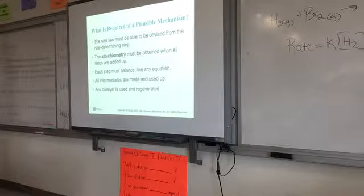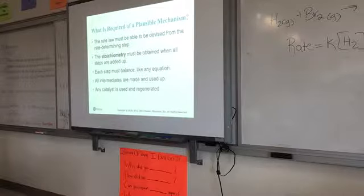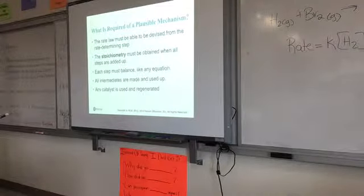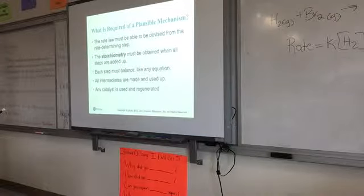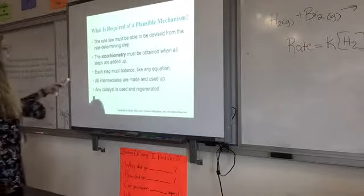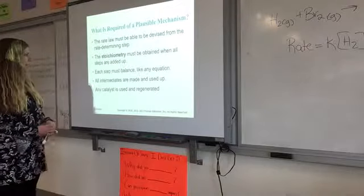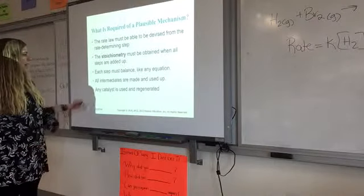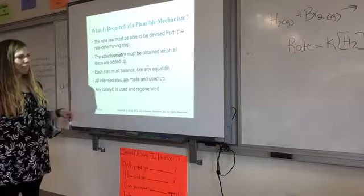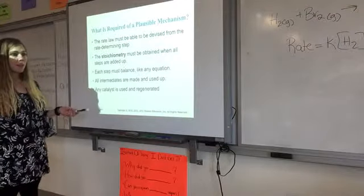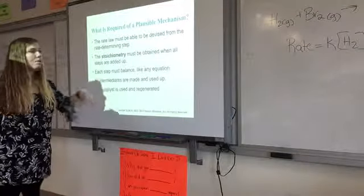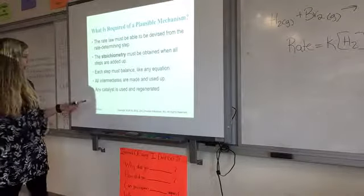So you have to write the rate law from the perspective of the rate determining step. And then like we showed with that ozone example, when you add up the elementary steps to equal the overall reaction, it should be consistent with the stoichiometry of that actual equation. Again, intermediates are made, so there are products in one step, then they're used up, which means they're reactants in another step.